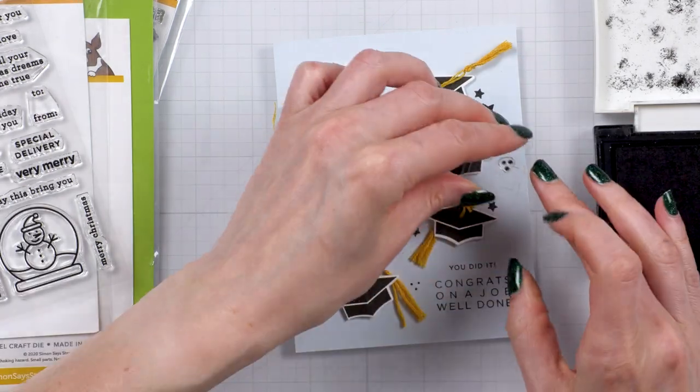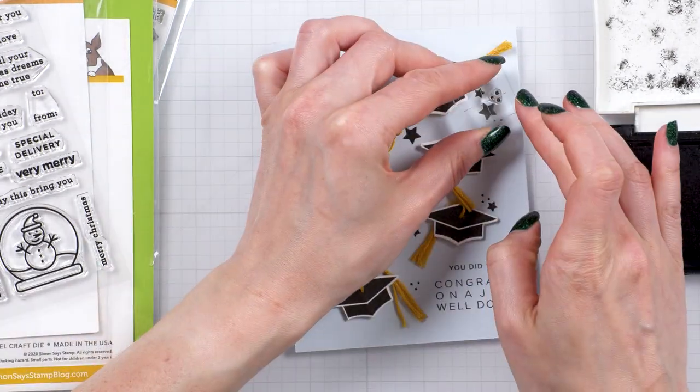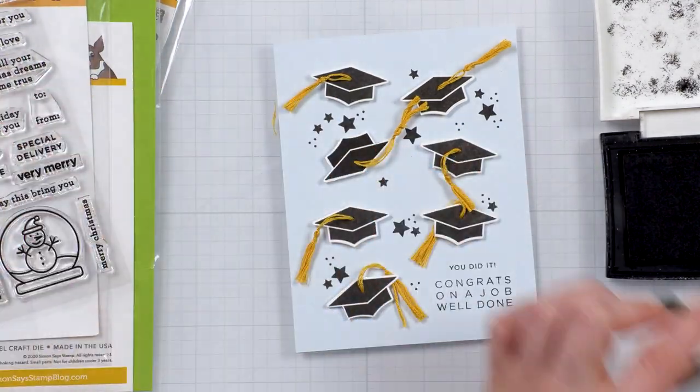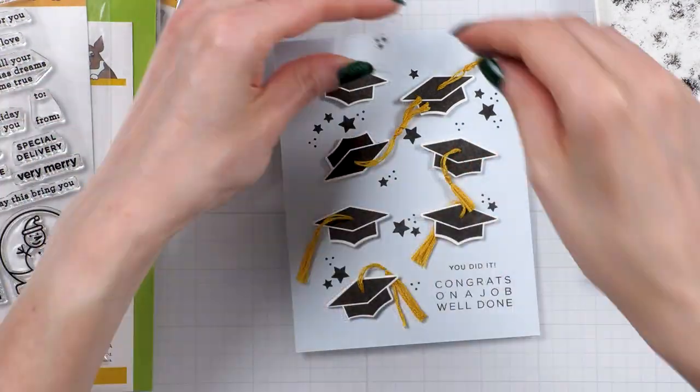You can use any small images that you have in your stash to add this type of filler to the card. Or you can even use a pen, a black pen, and draw some fillers yourself. It's pretty easy.